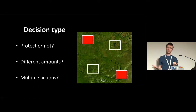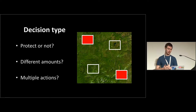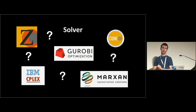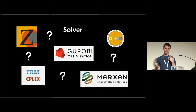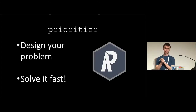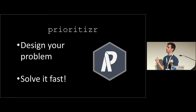We have to worry about what our decision type is: are we protecting an area or not, or dealing with different quantities like trapping intensity, or different management zones? In fishing areas you might have a no-take, a partial take, and a full take zone. And then once you've framed the mathematical problem, you have to think about how to solve it. We have conservation-specific tools and wonderful tools from computer science. With Prioritiser, we tried to bring all this together, focusing on designing a problem and then solving it fast.